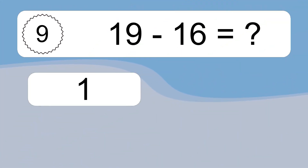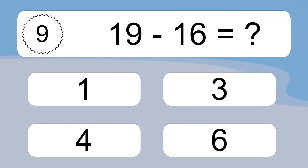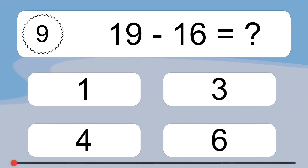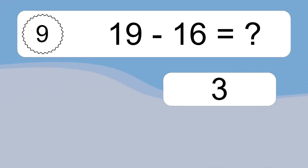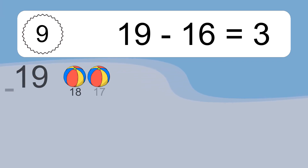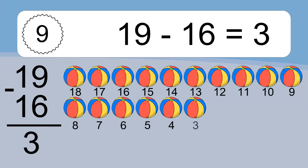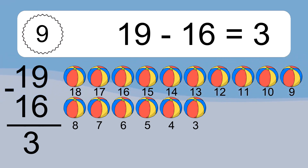19 minus 16 equals what? 19 minus 16 equals 3. Let's count it: 18, 17, 16, 15, 14, 13, 12, 11, 10, 9, 8, 7, 6, 5, 4, 3.